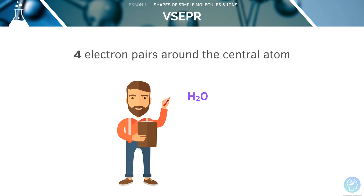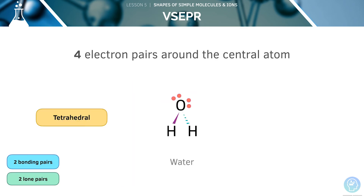Now, let's look at water. Oxygen has six outer electrons and is forming two covalent bonds, so it has two lone pairs and two bonding pairs. Yet again, there are four electron pairs around the central atom, so the arrangement is in a tetrahedral shape. However, there are two lone pairs, so the angle between the bonding pairs is reduced from 109.5 degrees to 104 degrees. Also, remember that the lone pairs are not considered when you name the shape.